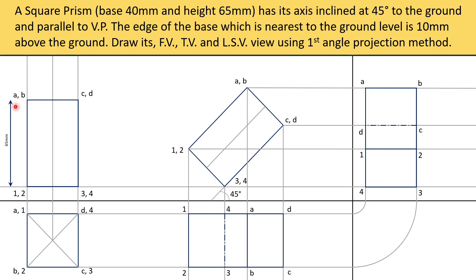Now we need to draw the dimensions. 65 mm is the height of the square prism. 10 mm is the gap, which is seen as 10 mm above the ground as mentioned in the question. And the base is 40 mm, also marked as 40 mm. We also need to mark the FV, TV and LSV. So this is the complete drawing of the assignment question number 1.